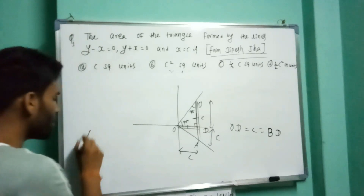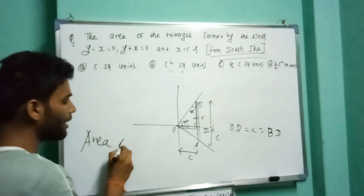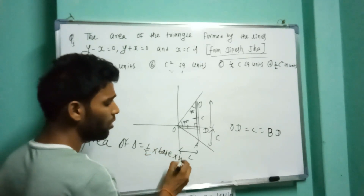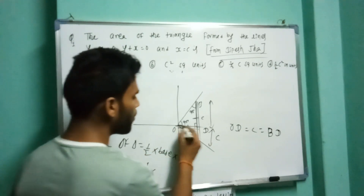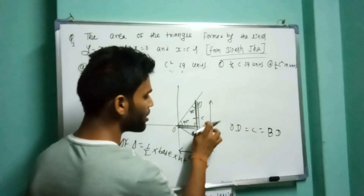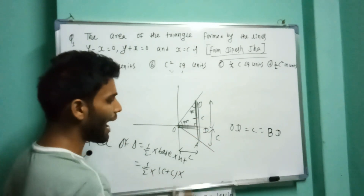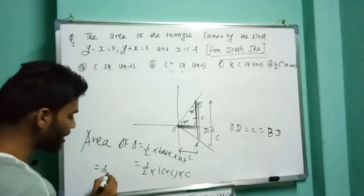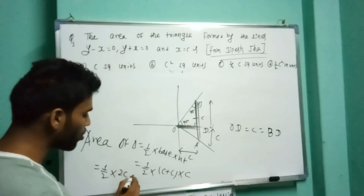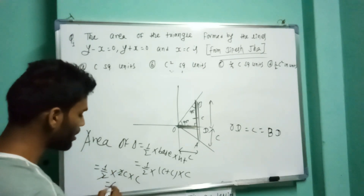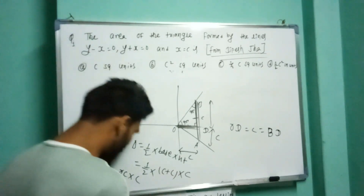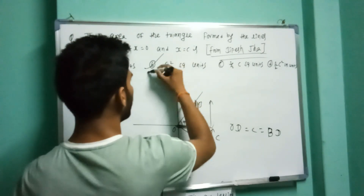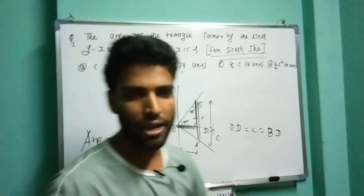The area of the triangle means half base into height. The base is c and the height is c. So the area equals half times 2c times c, which gives c squared. The area equals c squared square units. So the answer is option B: c squared units.